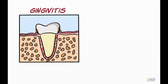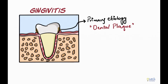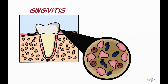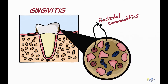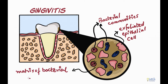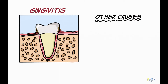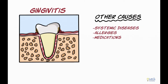The primary etiology of gingivitis is dental plaque, which comprises predominantly of bacterial communities in a matrix of exfoliated epithelial cells, bacterial and salivary proteins. Gingivitis could also be caused by systemic diseases, allergies, medications, hormones, viruses, and many other factors.